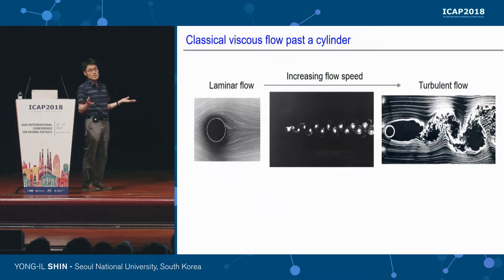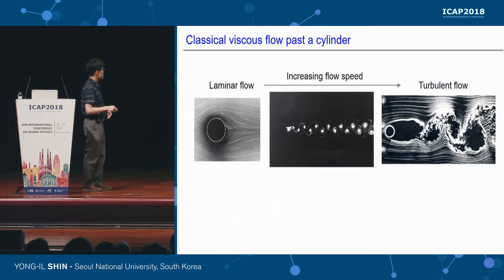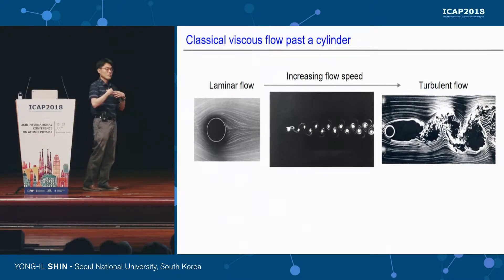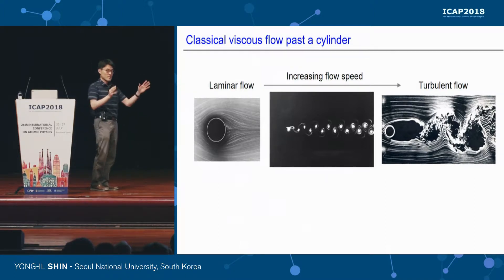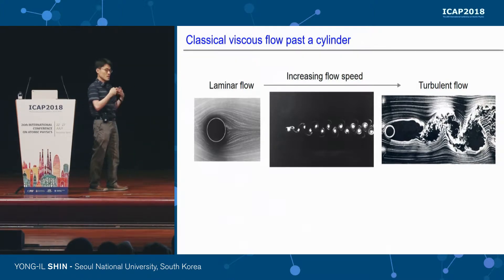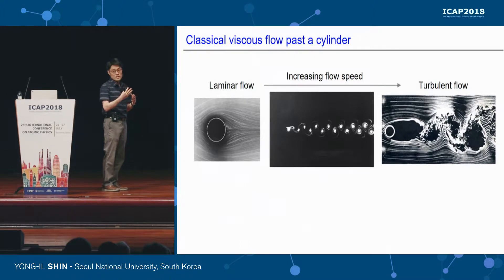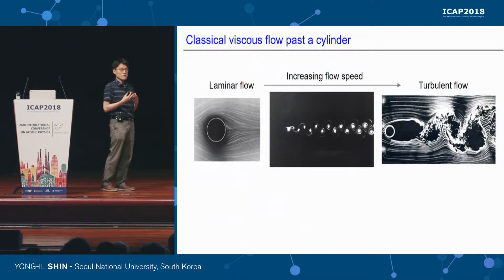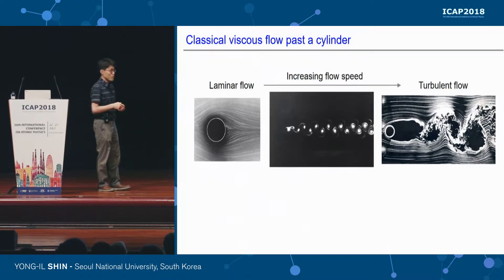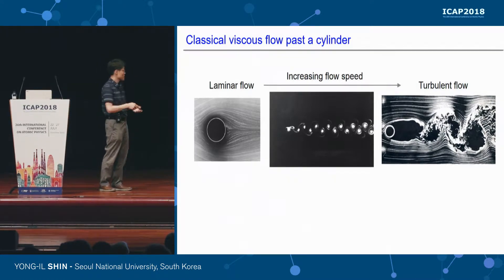Here we have a 2D situation where a hard cylinder is placed in the middle of a stream. This image shows how the flow develops around the cylinder. At low velocity you have smooth laminar flow. If you increase the velocity a little bit, vortices start appearing, shedding from the left and right sides of the moving object with alternating rotational sign. When you increase the flow velocity a lot, you get turbulent flow downstream.